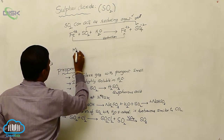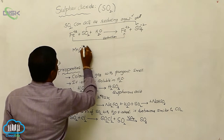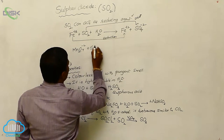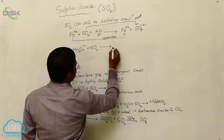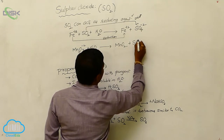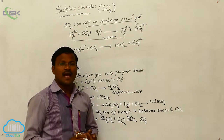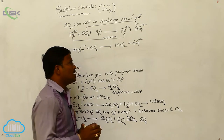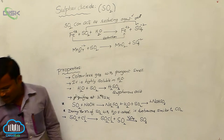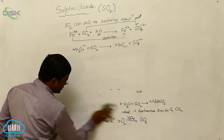Similarly, sulfur dioxide can also reduce Mn₂O₇. These two reactions stand as examples to explain the reducing behavior or reducing character of sulfur dioxide. Now let us learn about the structure of sulfur dioxide.